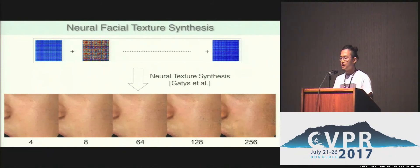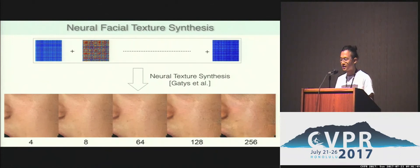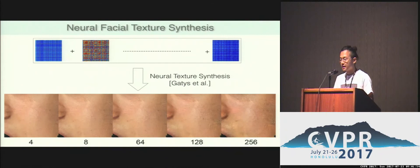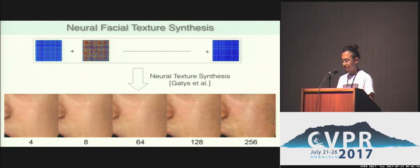Here, I show you our reconstruction result by taking an average of feature correlations from multiple subjects, with the number of samples as shown below. Surprisingly, our reconstruction results don't lose detail even after blending more than 100 subjects.